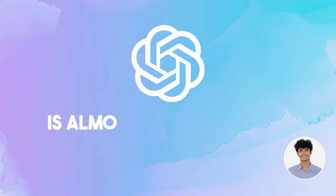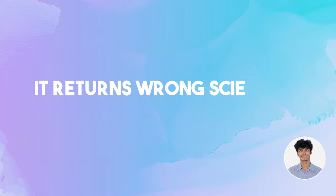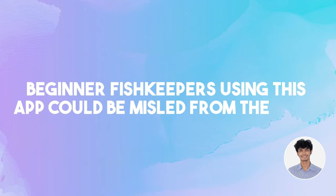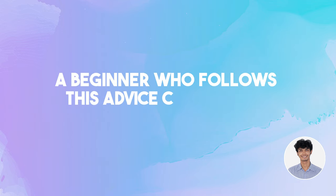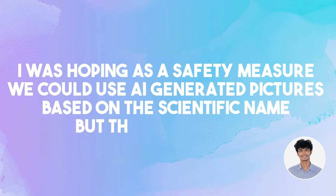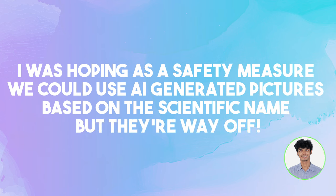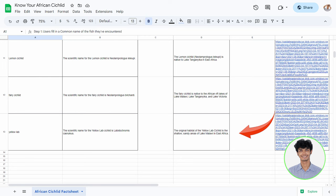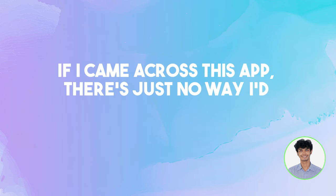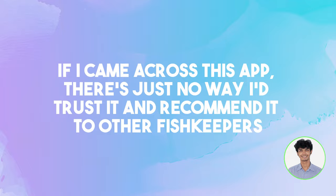The integration works, but there is a bigger problem: the facts are incorrect. As Ashraf says, OpenAI is almost always wrong — it returns wrong scientific names based on common names and wrong habitats based on scientific names. Beginner fishkeepers using this app could be misled from the start; a beginner who follows this advice could make mistakes that kill their fish. And the AI-generated pictures based on the scientific name are way off — for example, Row 13's Yellow Lab photo is a completely different fish. This is what a Yellow Lab looks like, but this is what DALL-E gave him. He just wouldn't be able to trust it enough for himself or to recommend to other fishkeepers.